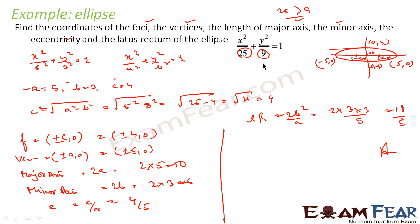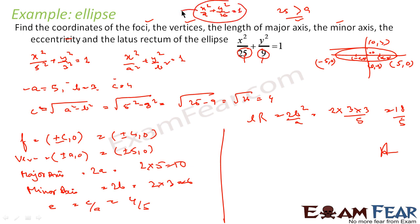Note: since 25 > 9, we used the form X² / A² + Y² / B² = 1. Had the equation been X² / 9 + Y² / 25 = 1, we would write it as X² / B² + Y² / A² = 1, because A is always greater than B.